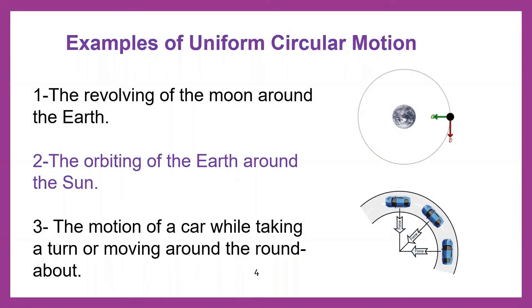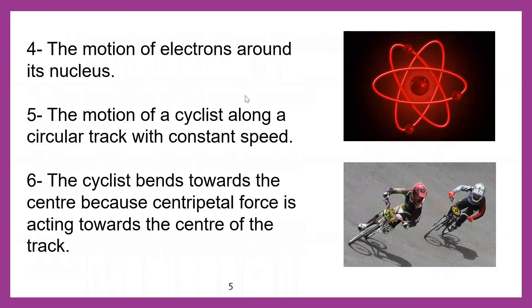I'm going to explain circular motion with the help of some examples. Number one: the revolving of the moon around the Earth. Number two: the orbiting of the Earth around the sun. Number three: the motion of the car while taking a turn or moving around the roundabout. Number four: the motion of the electron around the nucleus. Number five: the motion of the cyclist along a circular track with constant speed.